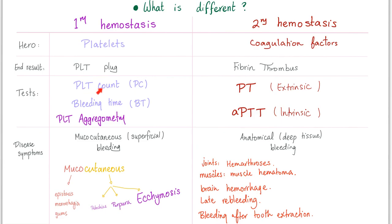Platelet plug is the end result. Fibrin thrombus. Platelet count, bleeding time, platelet aggregometry are the lab tests. Here we have PT and PTT. The old test was called coagulation time or clotting time, but it could only tell you that there is a problem with secondary hemostasis. But it could not distinguish between extrinsic or intrinsic. And that's why PT and PTT tests are way better. Disease symptoms: superficial bleeding, deep bleeding. This is mucocutaneous, but this is deep. Bleeding into joints, hemarthrosis. Bleeding into muscles, muscle hematoma. Brain hemorrhage. Late rebleeding. Bleeding after tooth extraction. And even GI bleed.